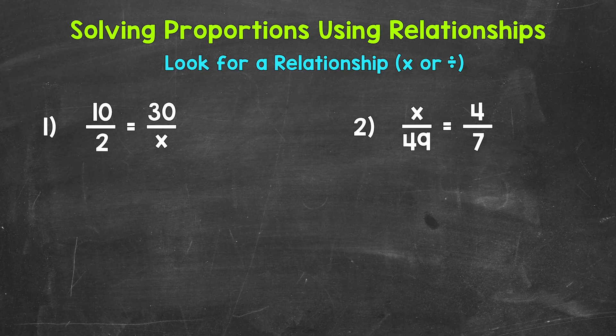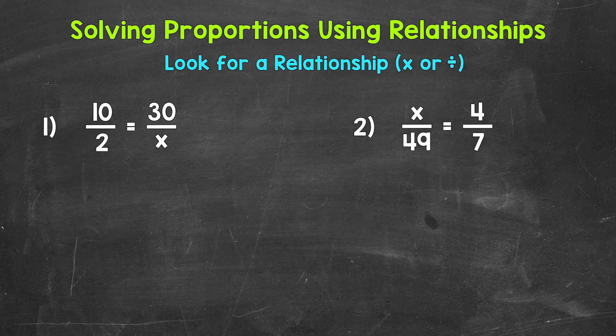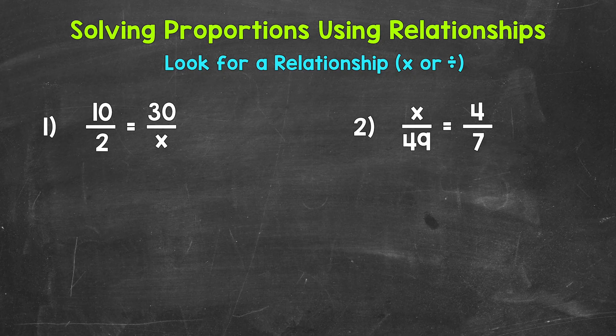Now remember, whatever we do to the top term, we must do to the bottom term, or vice versa. Whatever we do to the bottom term, we must do to the top term in order to keep this equivalent and in proportion. This is just like working with equivalent fractions. These just happen to be ratios in fractional form, and they form a proportion.